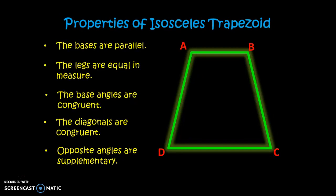Let us recall some properties of isosceles trapezoids. First, the bases are parallel — line segment AB is parallel to line segment DC. Second, the legs are equal in measure, so line segment AD is congruent to line segment BC.